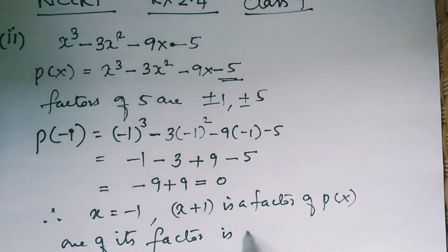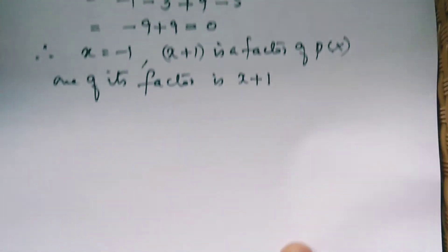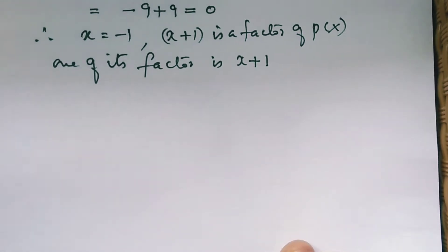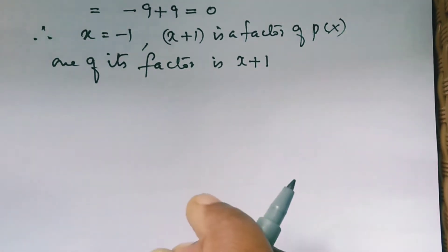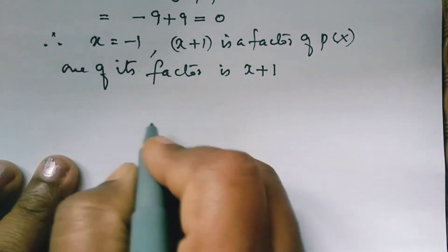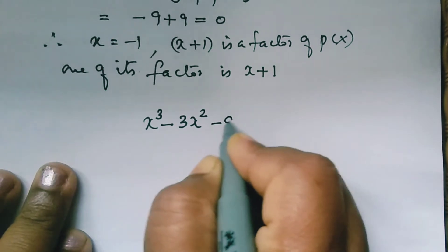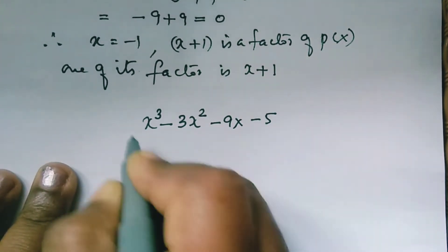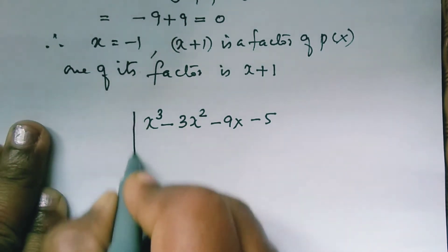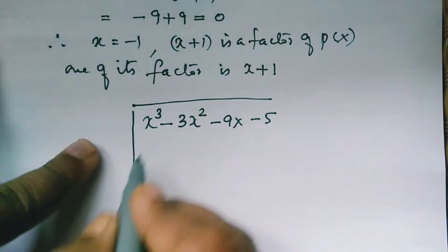From the cubic polynomial, one factor is found. Now, making use of that factor, we are going to find the remaining two factors using the division method. We will divide the polynomial x cube minus 3x square minus 9x minus 5 by x plus 1.